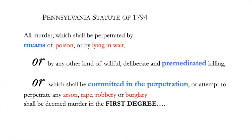A murder can become murder in the first degree in either of three ways. First, a murder committed by means of poisoning or lying in wait counts as first-degree murder. The Pennsylvania lawmakers evidently thought this kind of killing was especially unsettling — who knows if someone is putting something into our food, or is about to ambush us from the bushes?